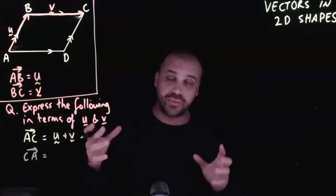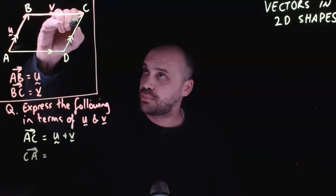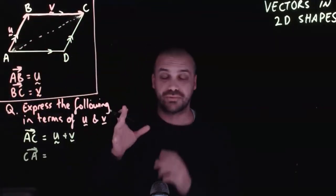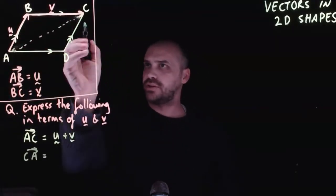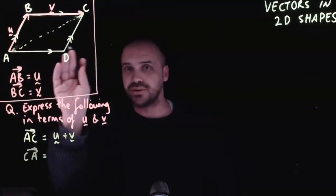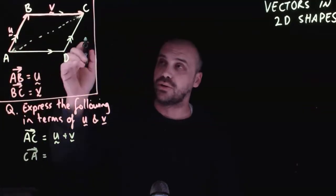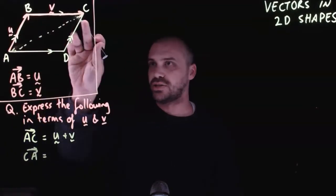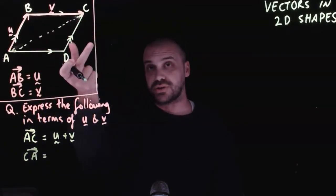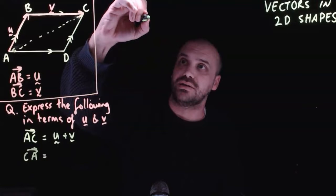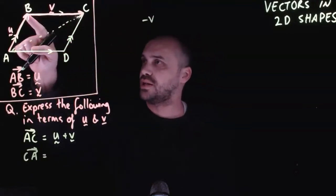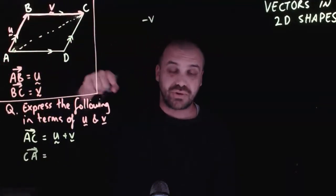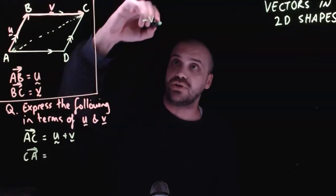Now, what if we wanted to go the other way, from point C to point A, that vector right there. To do that, we can go the short way, or we can go through a linear combination of vectors. That's going along the vector V, but in reverse. So that's negative V. And then going down U, but in reverse. So that's negative U.